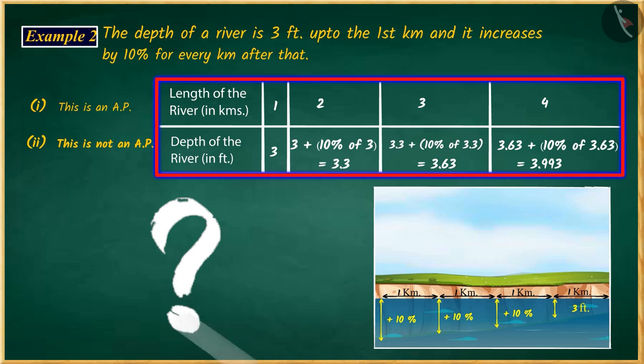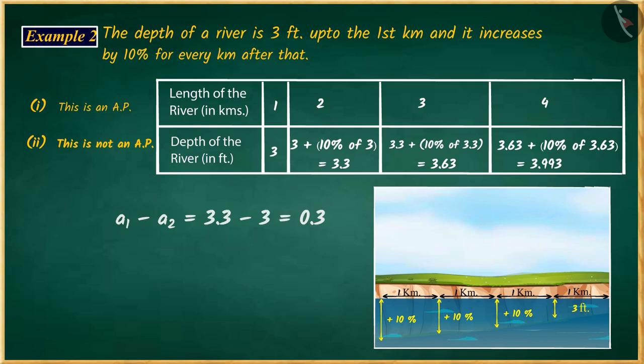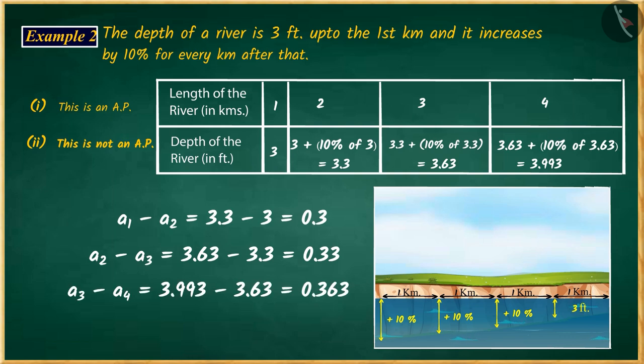Is this an arithmetic progression, i.e. an AP? To check this, we will have to discuss the common difference of this series. When we find the difference between the two consecutive terms of this series, we find that this difference is not the same. Hence, this series is not an arithmetic progression.